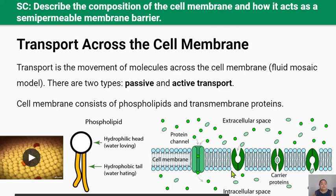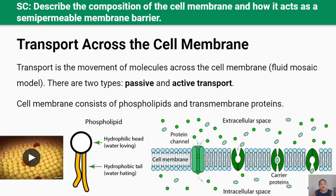There are two basic forms of transmembrane proteins: channels and carriers. Protein channels are open to both ends — the extracellular space and intracellular space — and allow molecules to pass through freely. For example, this is how molecules such as glucose enter a cell through a protein channel called GLUT1. On the other hand, carrier proteins are only open to one side of the cell membrane at a time and they change shape to transport molecules through the cell membrane.